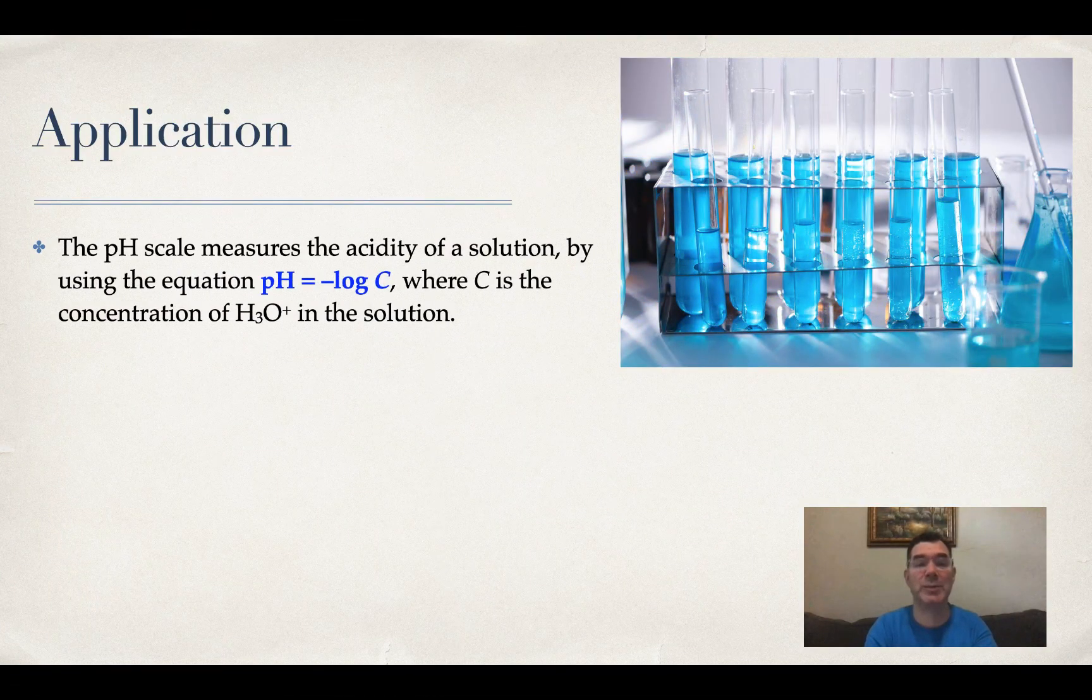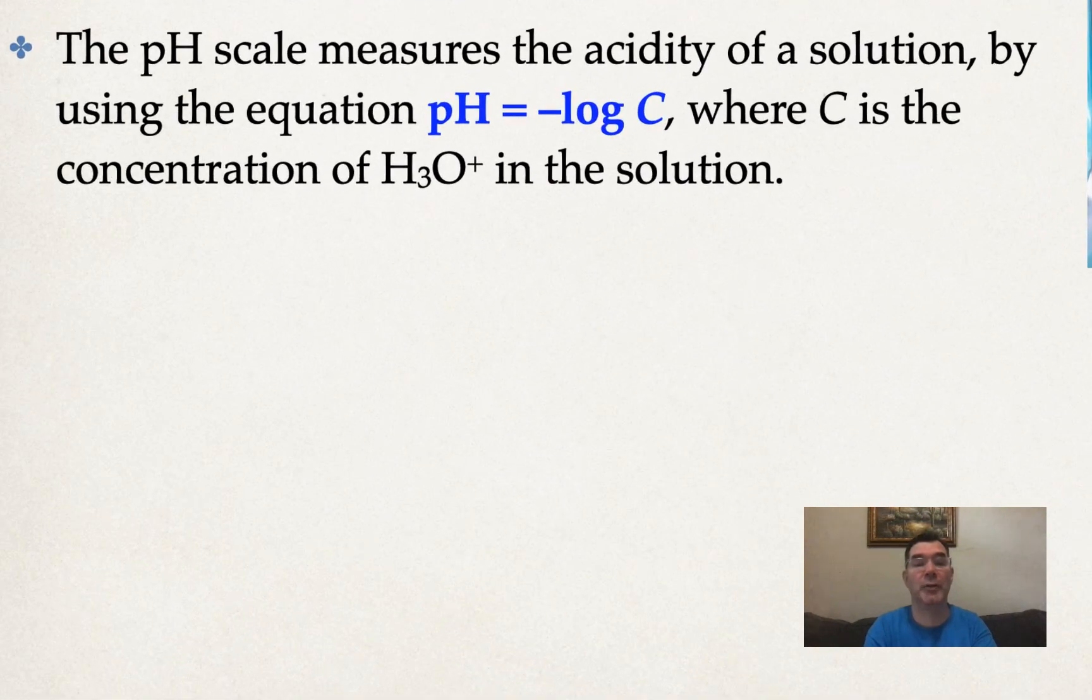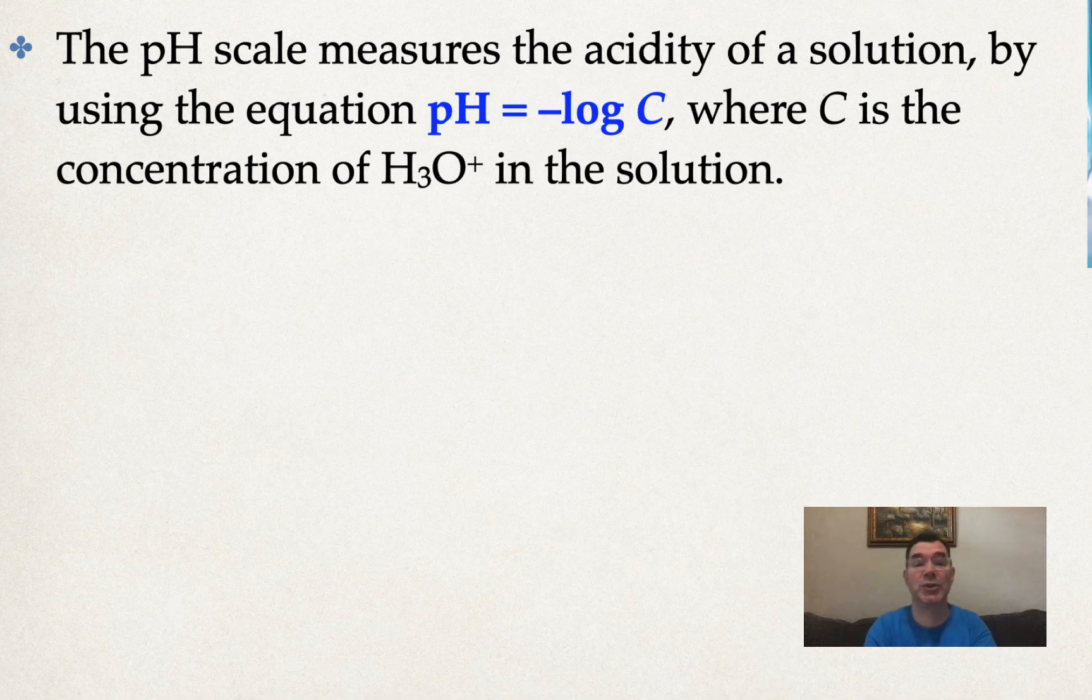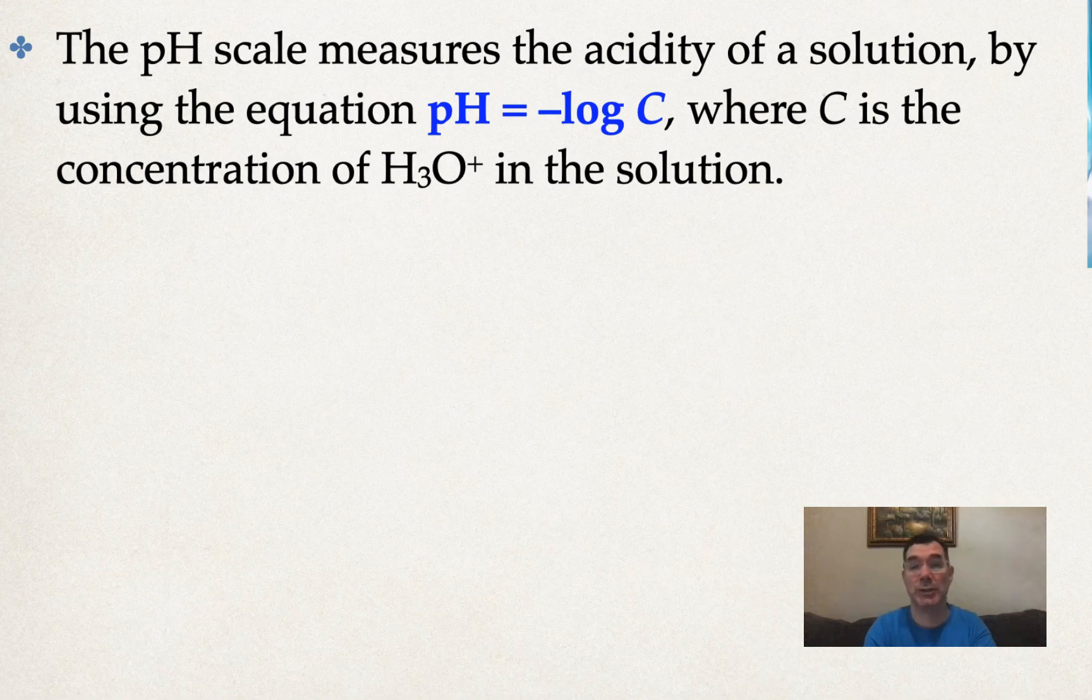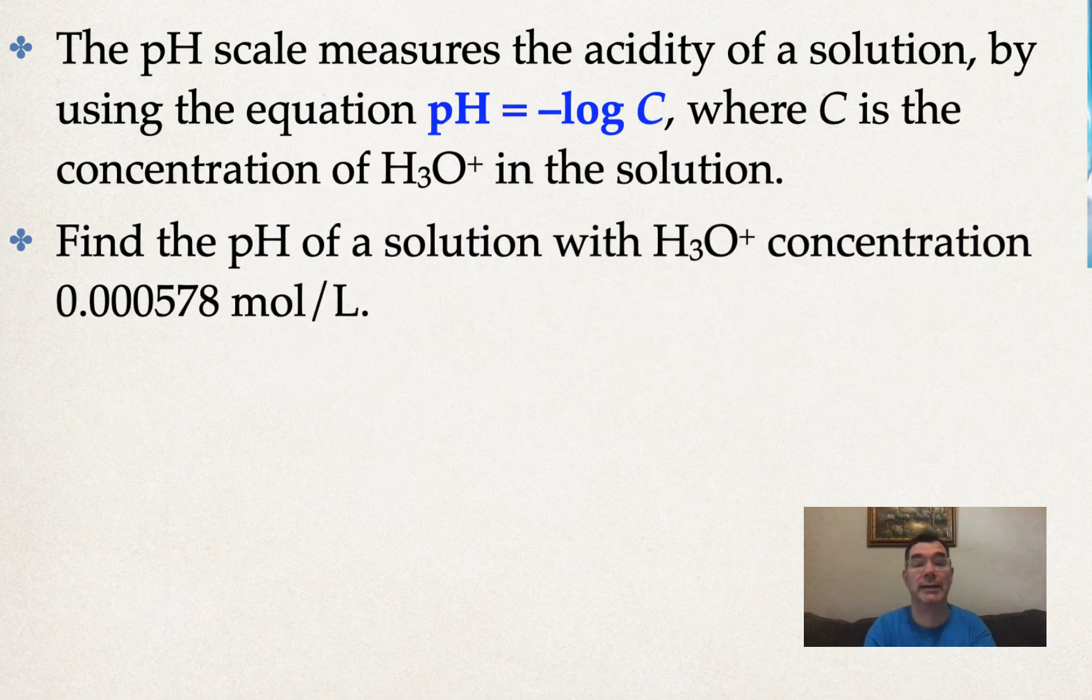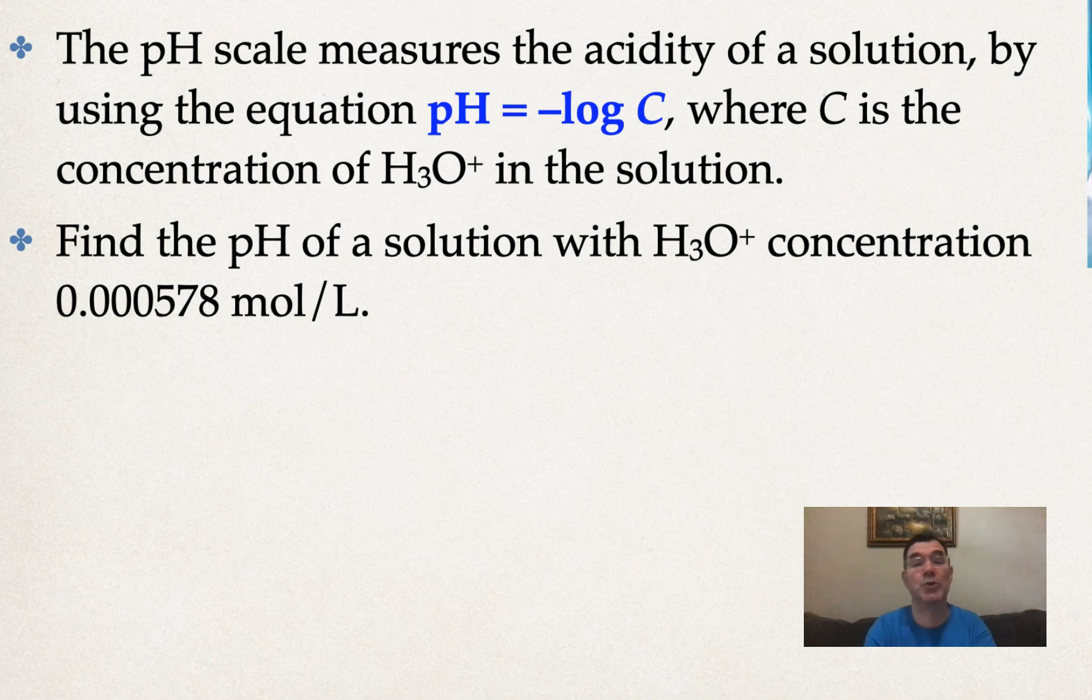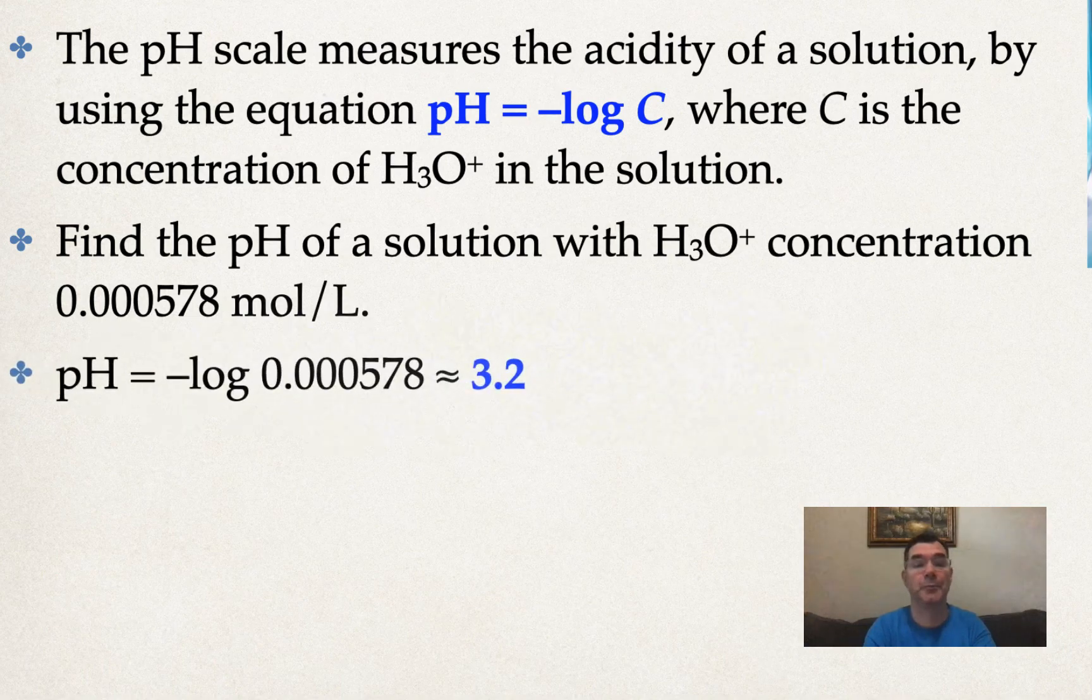So here's an application problem. In case you didn't know, the pH scale measures the acidity of a solution, by using the equation pH = -log C, where C is the concentration of H3O+ in the solution. Find the pH of a solution with H3O+ concentration 0.000578 moles per liter.